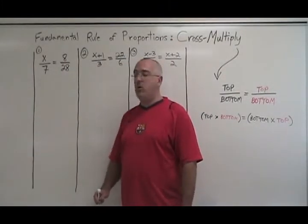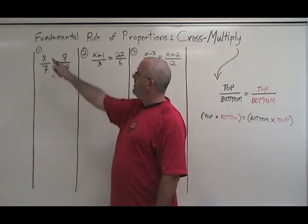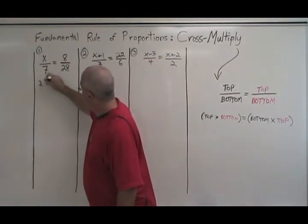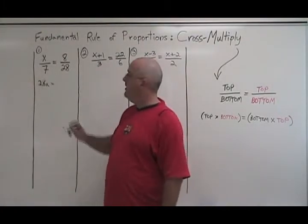In example one, we have a simple proportion with a single variable. Top times bottom means x times 28. We write 28x equals bottom times top means 7 times 8.